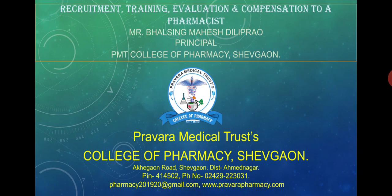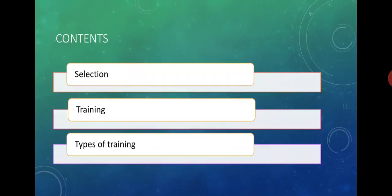In the earlier first lecture we have already studied the process of recruitment — what is meant by the process of recruitment — along with the sources of recruitment including internal sources and external sources. We also covered various methods of recruitment like direct method, indirect method, and third party method. In today's lecture we are going to study three main points: the procedure of selection, training after selection, and the types of training.